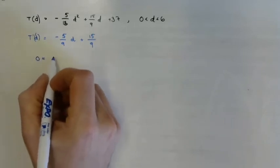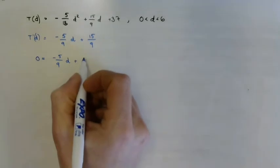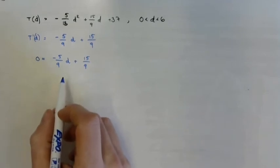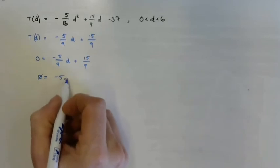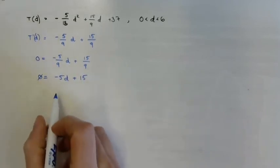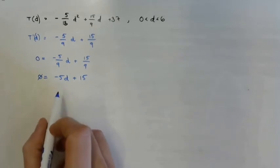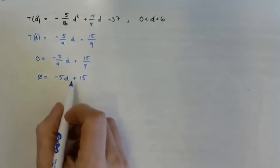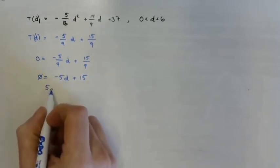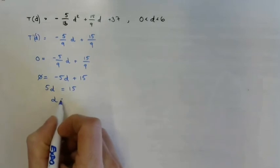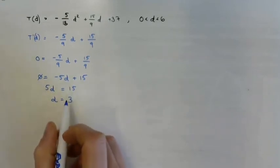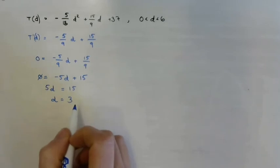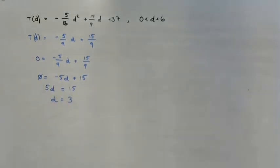Differentiating: T prime of D equals negative 5 over 9 times D plus 15 over 9. Setting equal to zero and multiplying each side by 9, then solving: 5D equals 15, so D equals 3. This value divides the domain into two parts — one side will be increasing and one side decreasing.